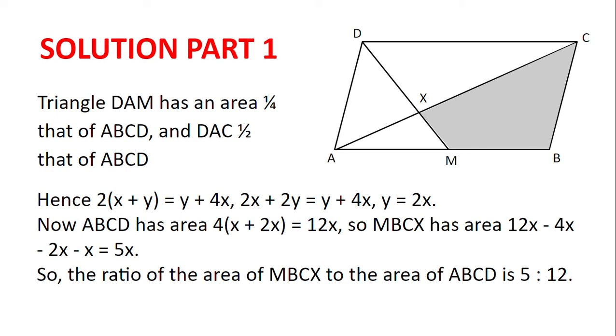Hence 2 multiplied by X plus Y equals Y plus 4X and so Y equals 2X. Now ABCD has area 4 multiplied by X plus 2X which is 12X, so MBCX has area 12X minus 4X minus 2X minus X which is 5X. So the ratio of the area of MBCX to the area of ABCD is 5X to 12X.